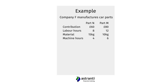By looking at the information we have here, we can see this decision won't be straightforward. Part M generates more contribution; however, it requires four more labour hours per unit and also two more machine hours. So to solve this problem, we need to know Company F's situation in terms of how many labour hours, how much material, and how many machine hours it has available.